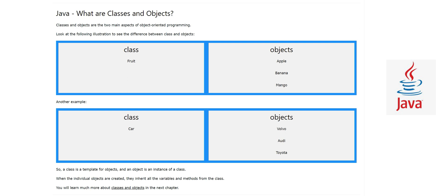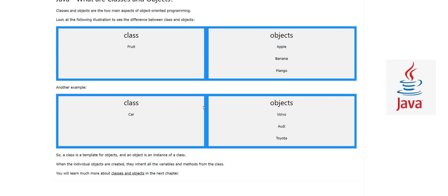Similarly, we have objects Volvo, Audi, and Toyota — these are objects of the class 'Car.' These objects will inherit all the methods and data which we have in the class. For example, a fruit can have a color — we can define a color attribute, but for each object the color can be different: apple can be red, banana can be yellow, and mango can also be yellow.